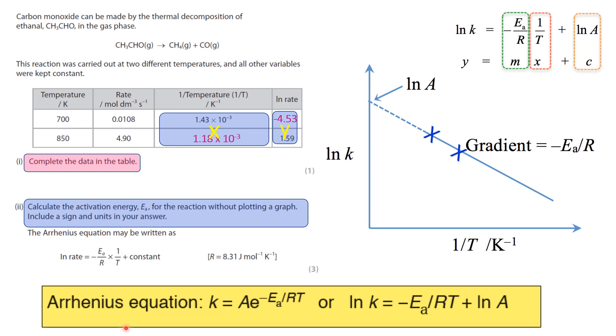And you could plot points because you've got two sets of coordinates. So taking the version of the logarithmic Arrhenius equation that they've given you in the question down here, and just putting it up here, you can see that the natural log of rate is y, minus E over R is m, 1 over T still is x, and the constant is c.